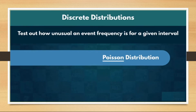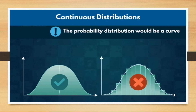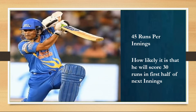The fourth one is Poisson distribution. It is used to estimate the frequency of an event in a given interval. For example, Sachin Tendulkar scores on average 45 runs per innings — then how likely is he to score 30 runs in the first half of the next inning? Since we are not talking of a full innings, the probability needs to be adjusted, and this is where Poisson distribution helps.